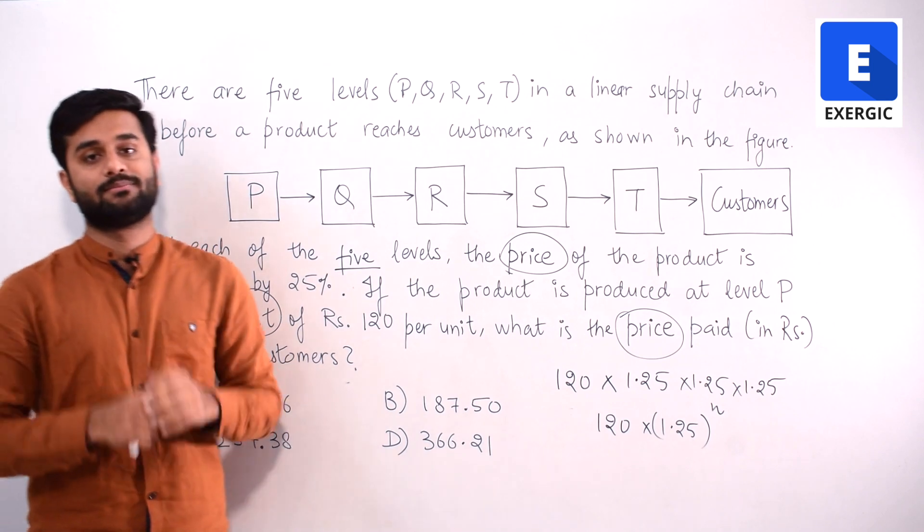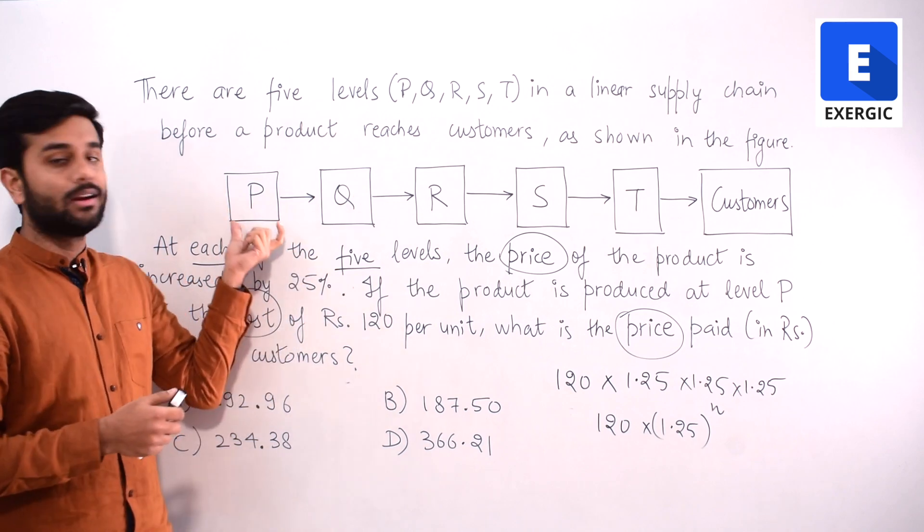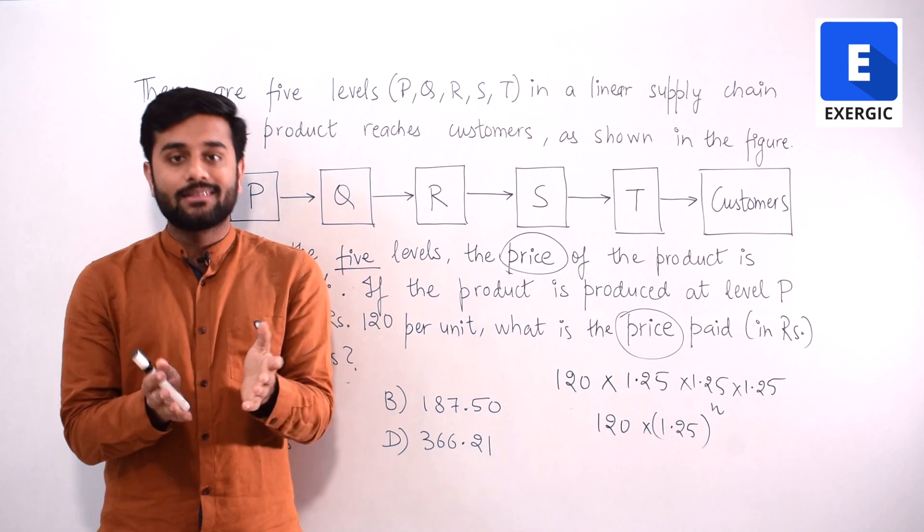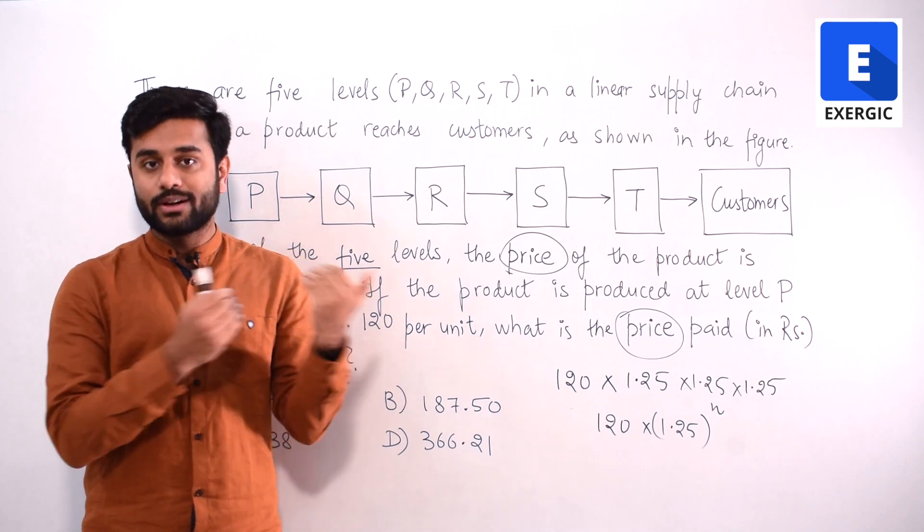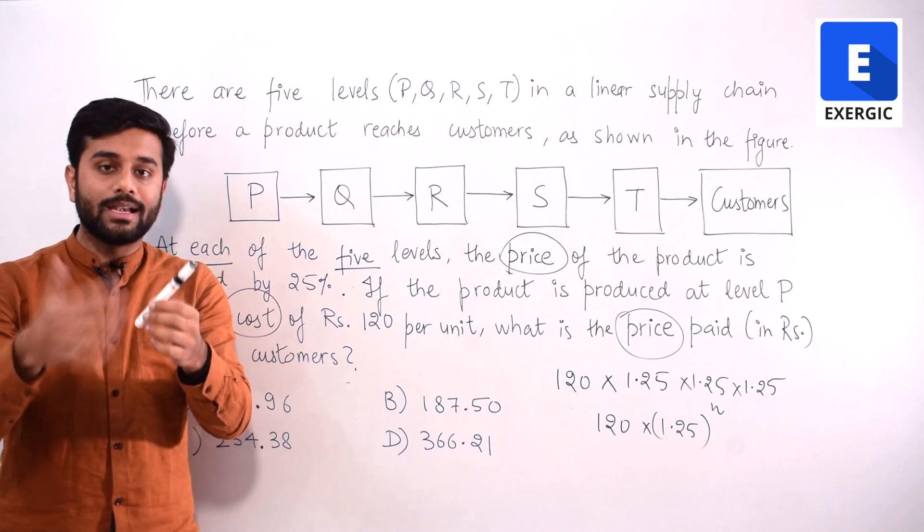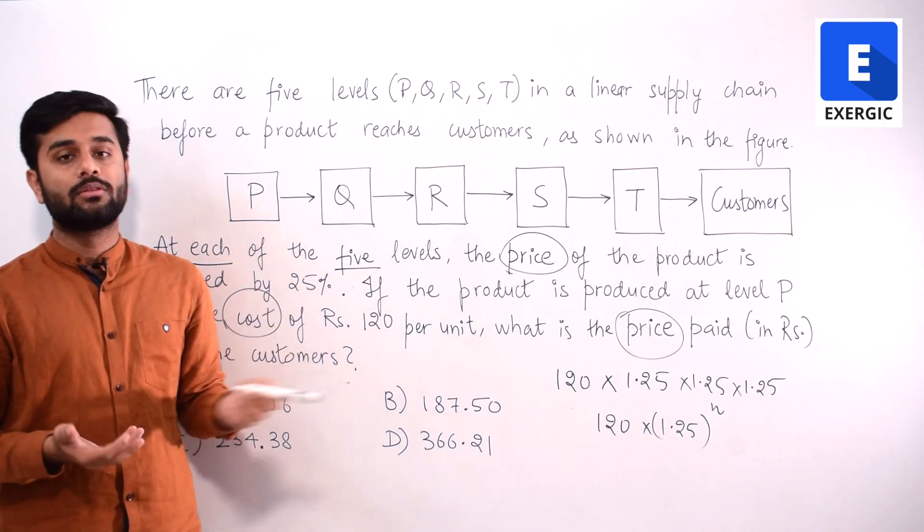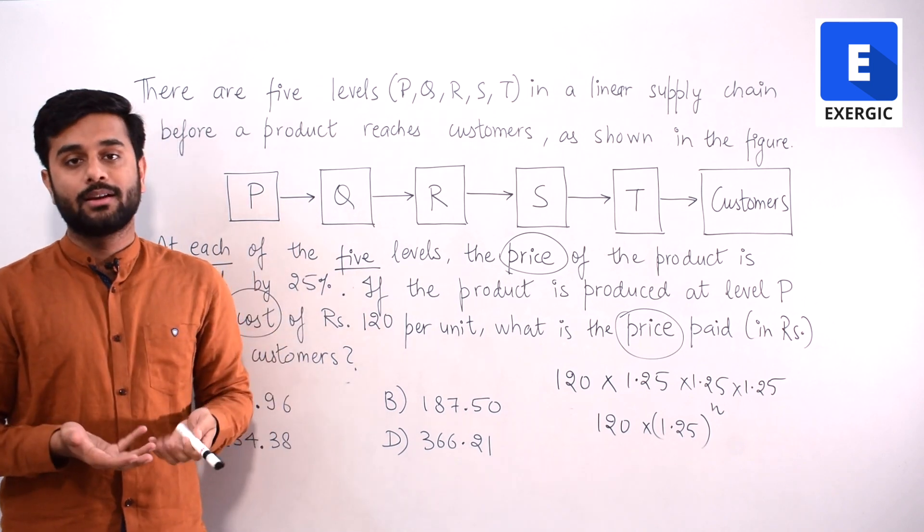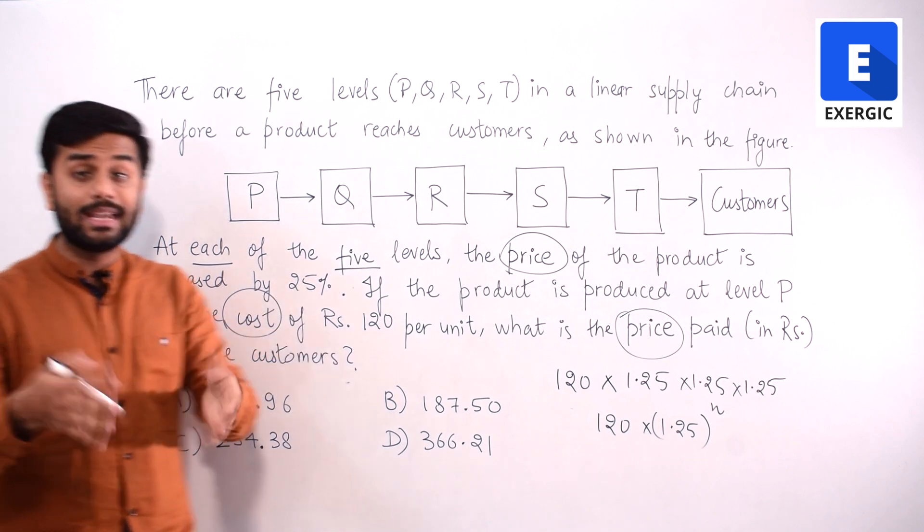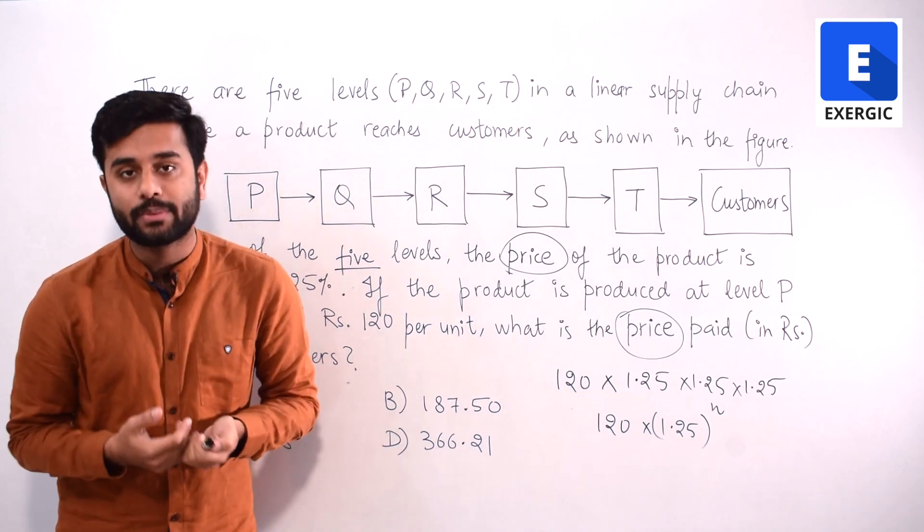But look here, this is cost. 120 is the cost of producing the part at P. It is not the price of the product at P. So in layman's language what is happening here? P is producing a part by spending Rs. 120 per part. Now why will it send the part to Q without adding any profit? 120 is the cost, it is the amount which it is spending in making the part. Obviously it will increase the price. It is doing the manufacturing. Why will it not increase the price?